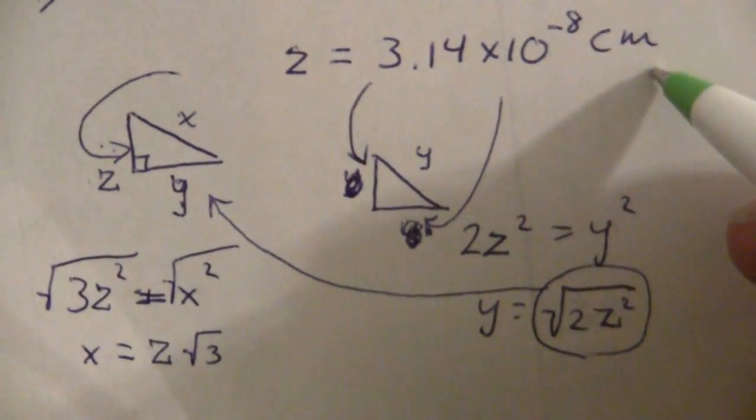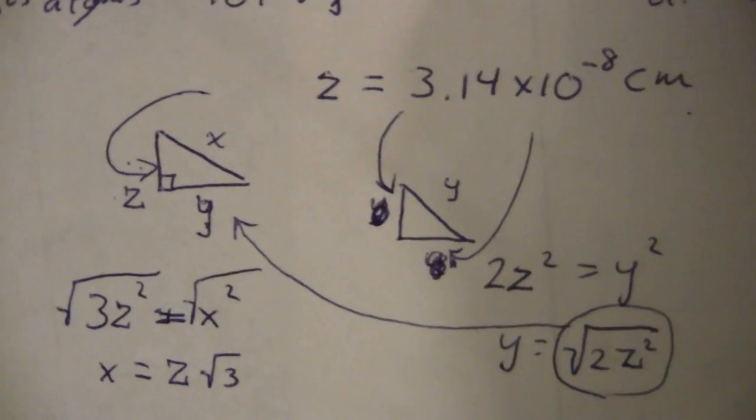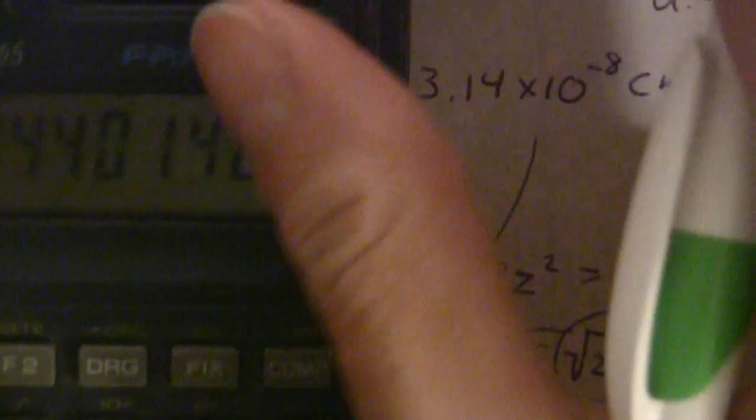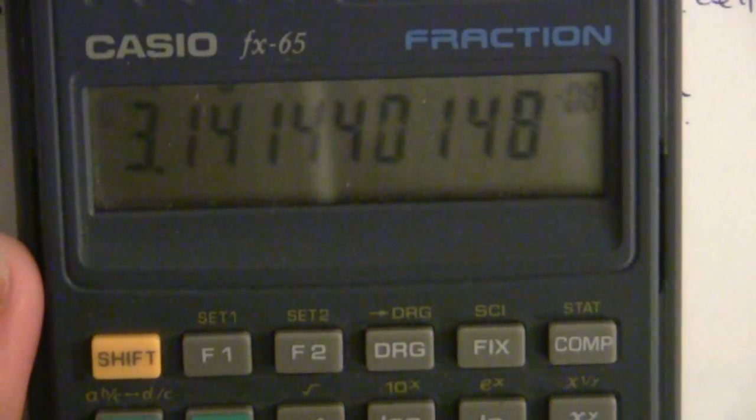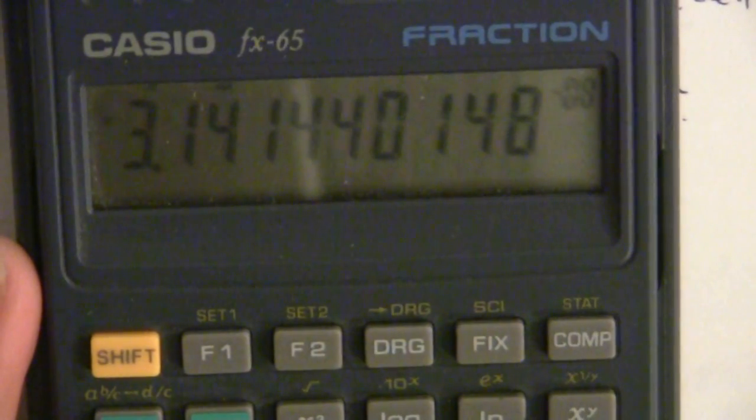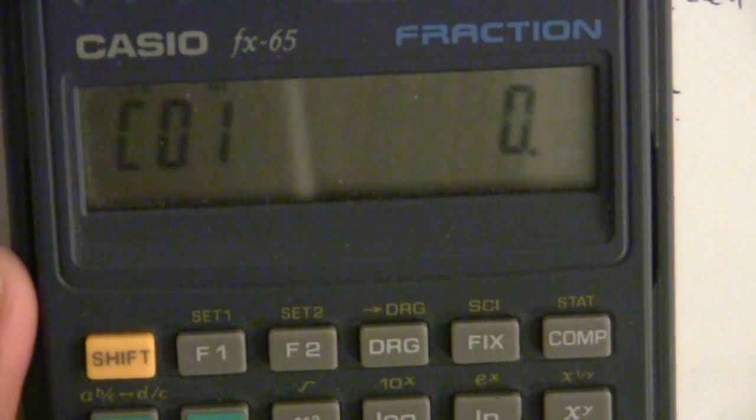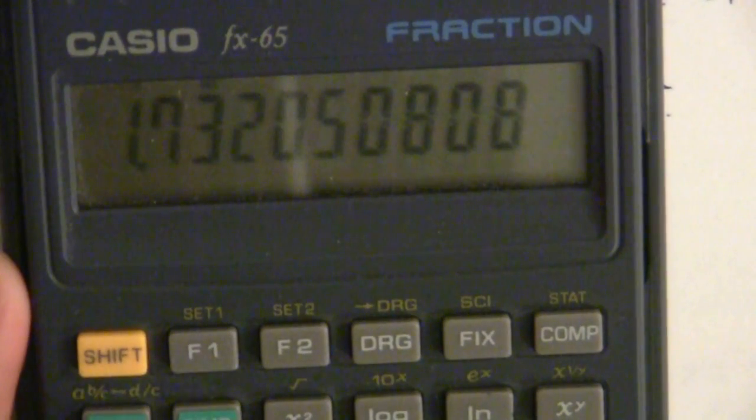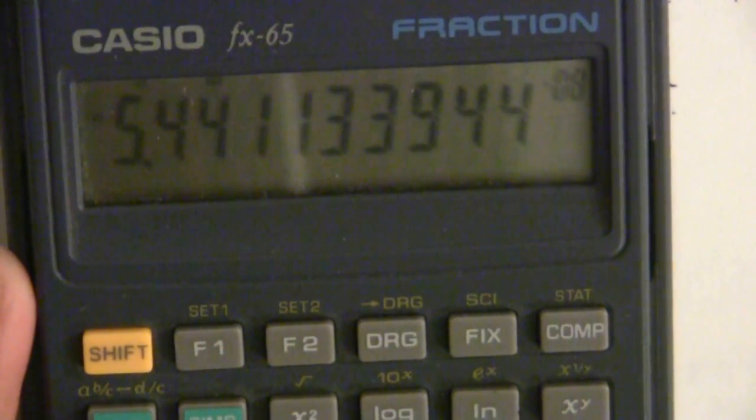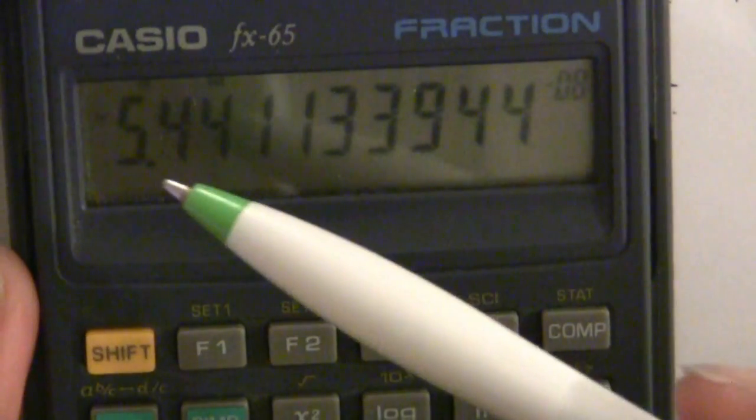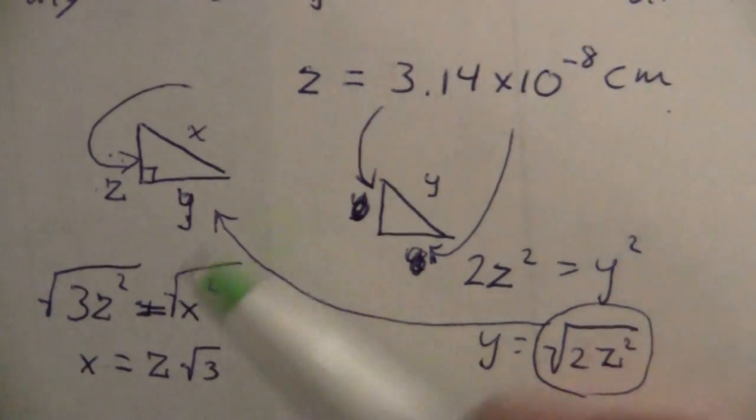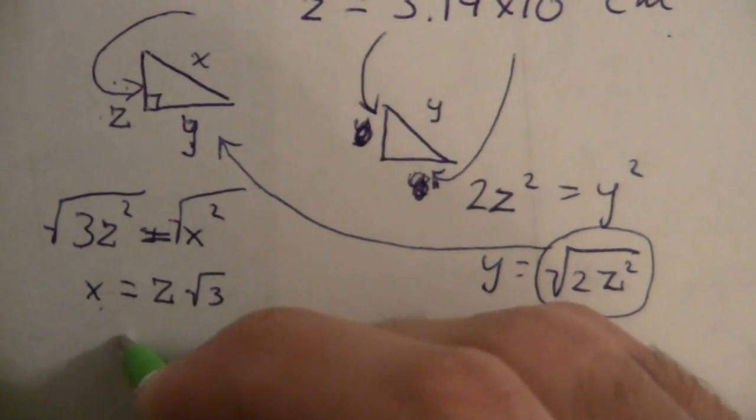Alright, so z is this value here, so all I need to do is take that value, multiply it by the square root of 3. So let's see if I can do this here, times, and just in case I'm going to use the parentheses, and take 3 square root, close parentheses, equals, and I have 5.44 times 10 to the minus eighth.